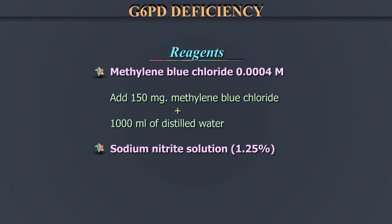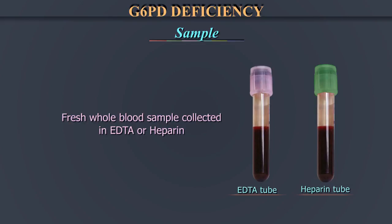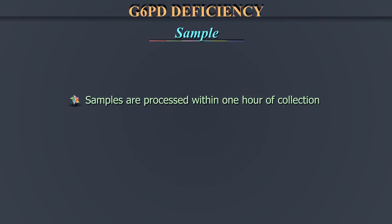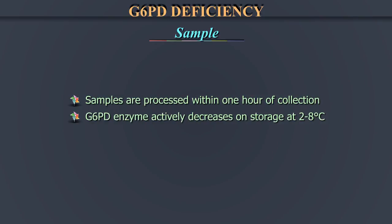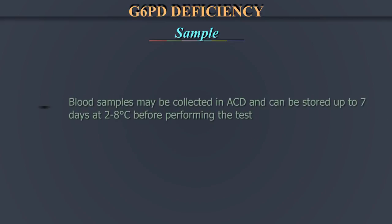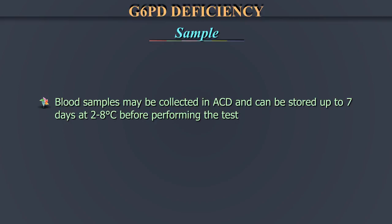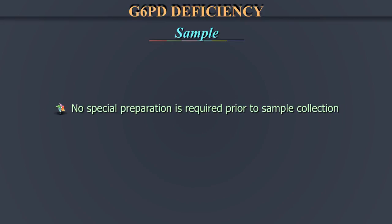Reagents: 1. Methylene blue chloride, 0.0004 molar — add 150 mg methylene blue chloride in 1000 ml of distilled water. 2. Sodium nitrite solution, 1.25%. Sample: A fresh whole blood sample collected in EDTA or heparin only. The samples must be processed within 1 hour of collection, since the G6PD enzyme actively decreases on storage at 2–8°C. Blood samples may be collected in ACD and can be stored up to 7 days at 2–8°C before performing this test. No special patient preparation is required prior to sample collection.